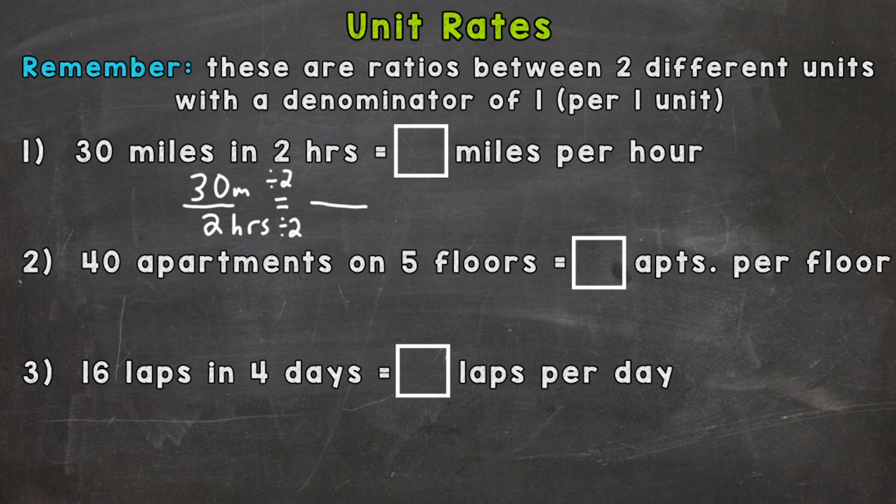Now 2 divided by 2 is 1, 30 divided by 2 is 15. So now we have 15 miles per one hour or 15 miles per hour. So 30 miles in two hours equals 15 miles per hour or per one hour. That's our unit rate.